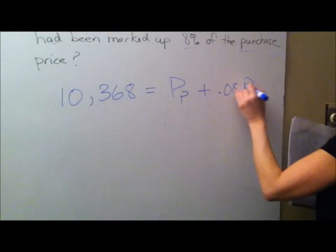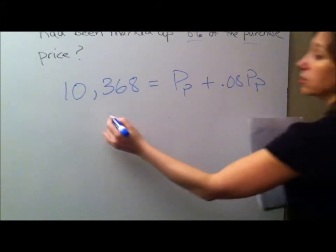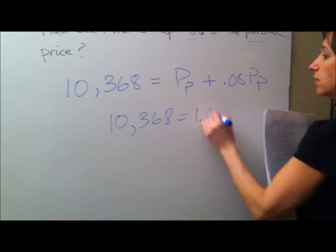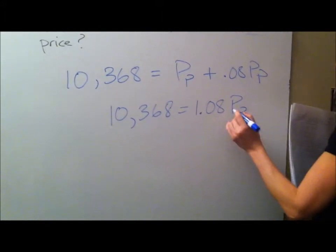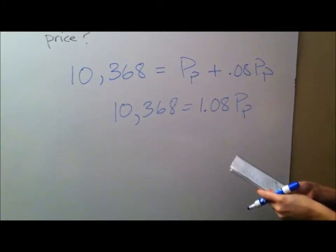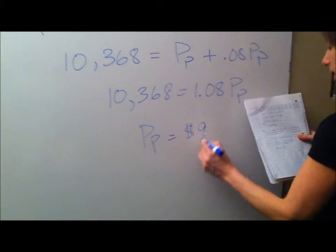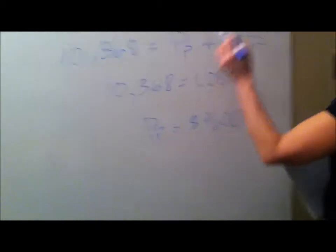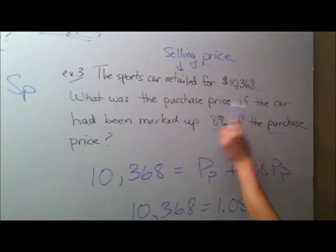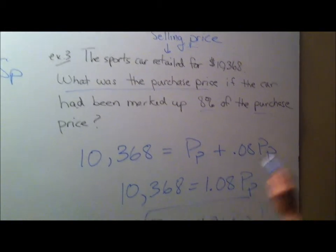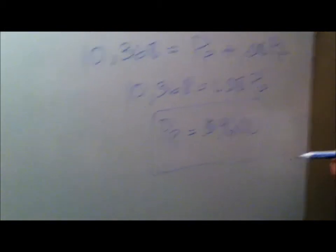$10,368 equals 1.08 purchase price. Divide both sides by 1.08, and we're going to get the purchase price is $9,600. And what did they ask? What was the purchase price? And so we got the purchase price, and we're done. That's it. Okay.